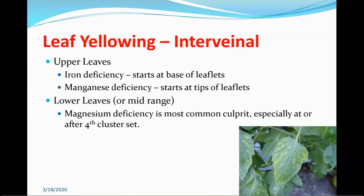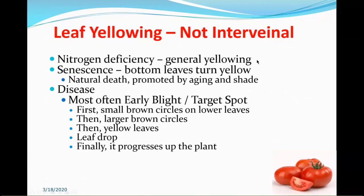To verify magnesium deficiency, use tissue analysis. You can also spray with magnesium sulfate (Epsom salt) — two tablespoons per gallon — dissolved well, sprayed on a few plants. Within a week they should be almost entirely green. If the yellowing is not interveinal, a general yellow cast from top to bottom indicates nitrogen deficiency. Older leaves turning yellow that are naturally shaded and dying off is normal senescence — it's okay to remove those lower leaves since they're no longer contributing to the plant.